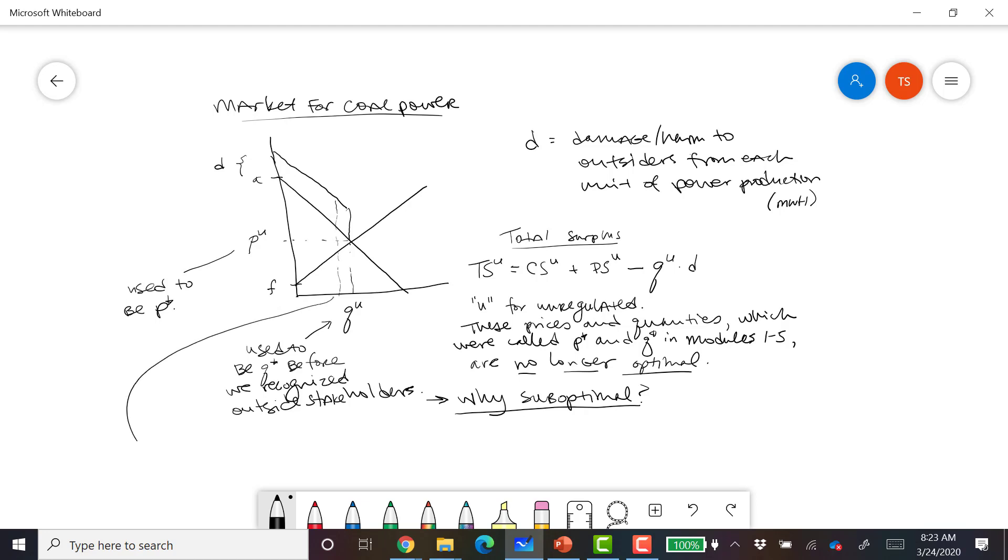Okay, this is an example of lower Q with higher TS. Okay, and why is that? Why is it suboptimal? Well, because if we lower the quantity here, we lose only the amount of surplus to the market participants, but we save a very large amount of damage to people outside the market.